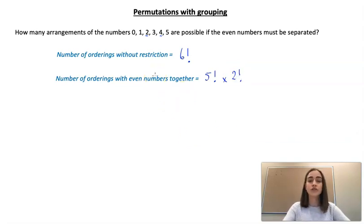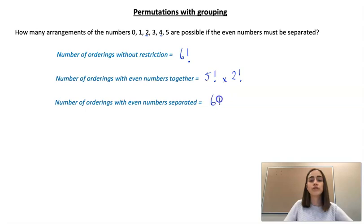All right, so now we can answer our actual question. So the number of arrangements where those two even numbers are separate is going to be the total number of arrangements minus the number of arrangements where they're together. So if we calculate that we would end up with 480.